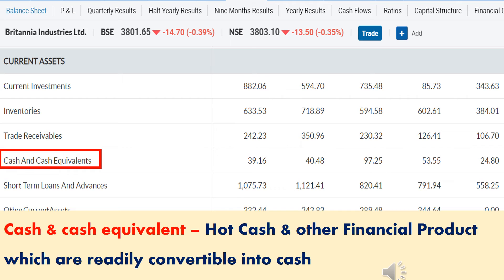The next term is Cash and Cash Equivalent. In any company, the hard cash available plus bank balance plus other financial products readily convertible into cash — all these are considered as cash and cash equivalent. If any company has more cash and cash equivalent, then that is a positive point for that company.